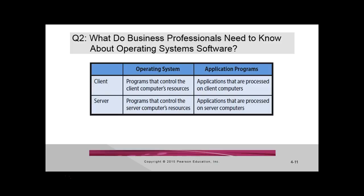The third type we mentioned is one-of-a-kind software — software that is unique to your organization. If we built something to track how the Franciscan Goals of Education inspired each student here from freshman to senior year, we'd have to build that from scratch. No one else has the Franciscan Goals of Higher Education. The example the book uses is the IRS: the federal government is the only one that processes federal tax returns, so they need their own specialized, one-of-a-kind software.